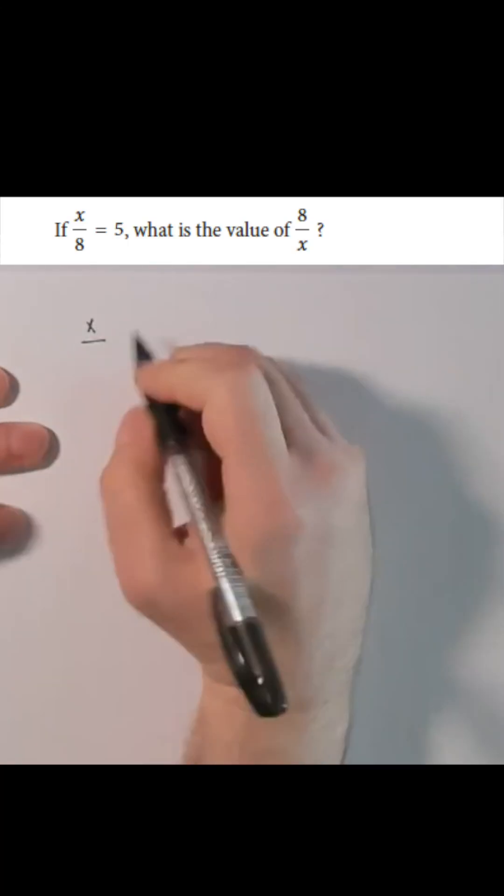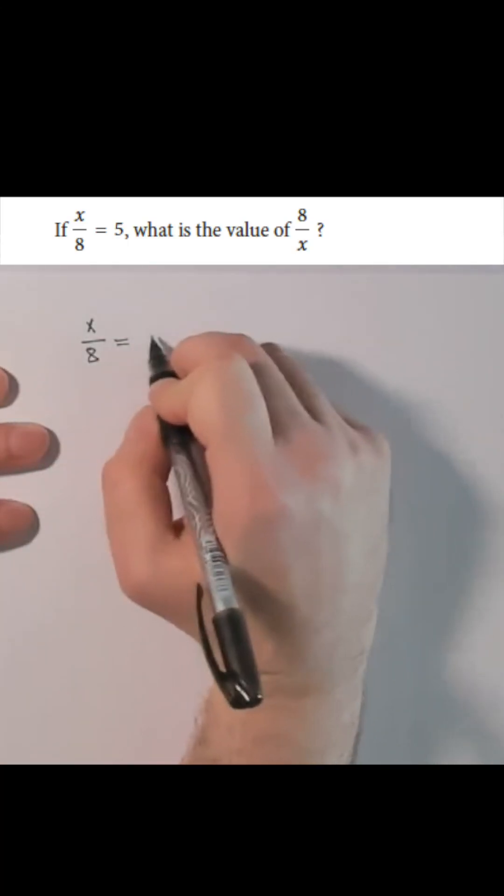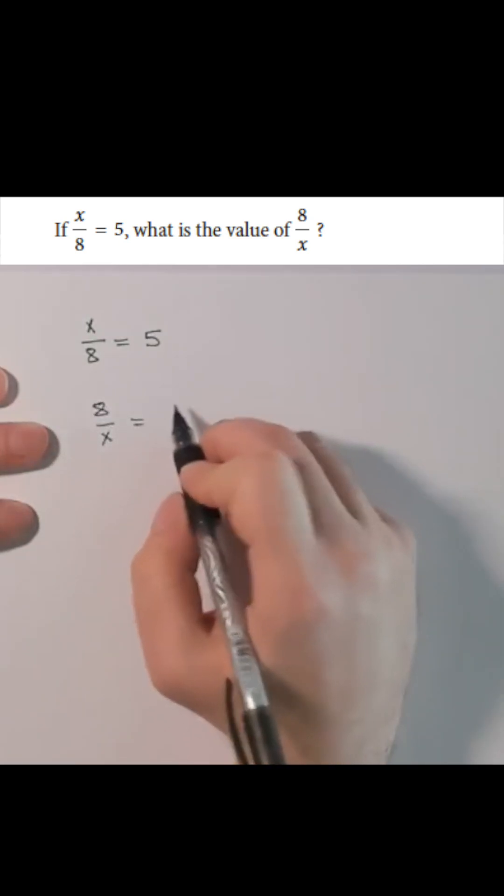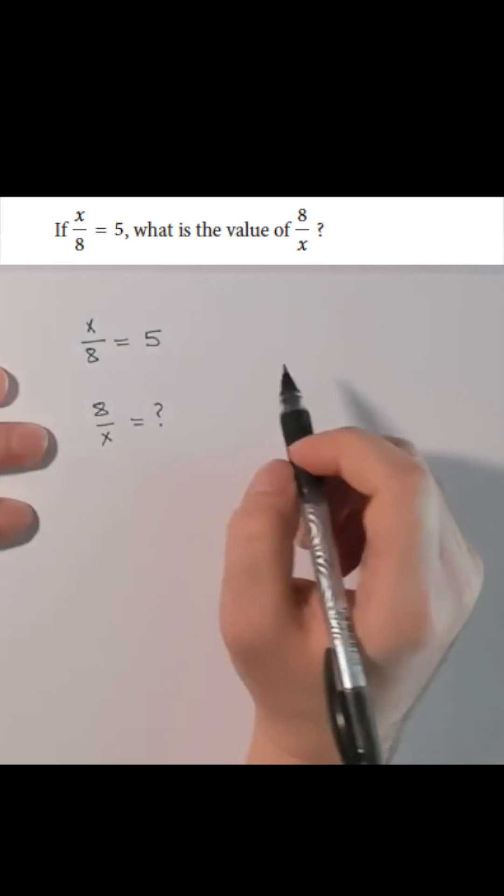So we're given x over 8 is equal to 5 and we need to find what 8 over x is equal to. This could be approached in different ways.